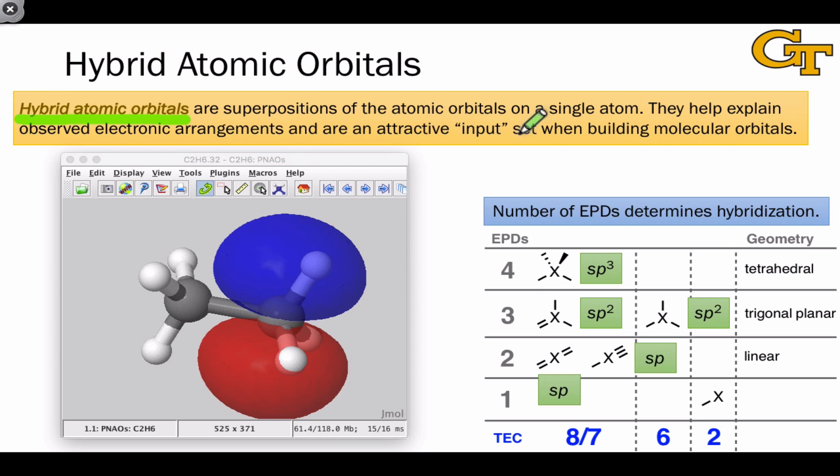And these are superpositions of the atomic orbitals on a single atom. In essence, we take some of the s orbital at an atom, we add up some of the 3p orbitals, one, two, or three of them.